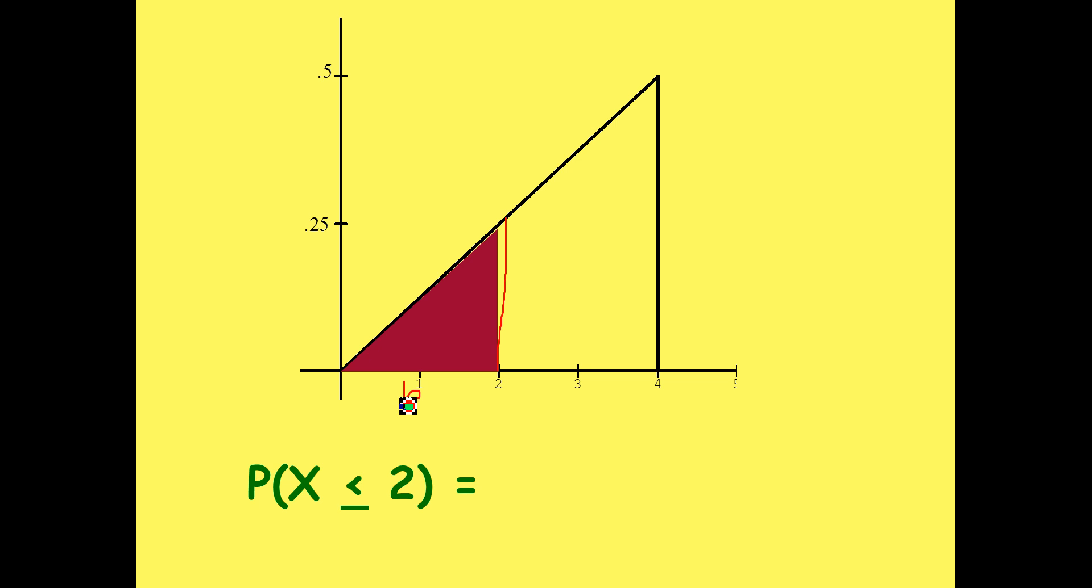All we need to do is multiply the base times the height and divide it by 2. Well, the base is going to be a length of 2, because it runs from 0 to 2. And the height is going to equal 0.25. Why is that? Because the vertical side of the triangle runs from 0 to 0.25.